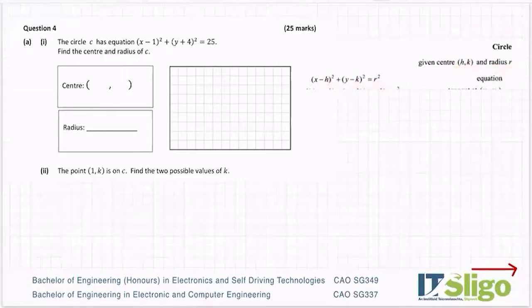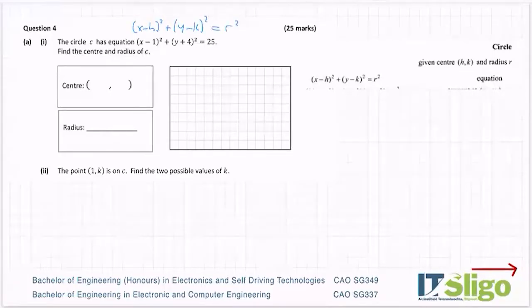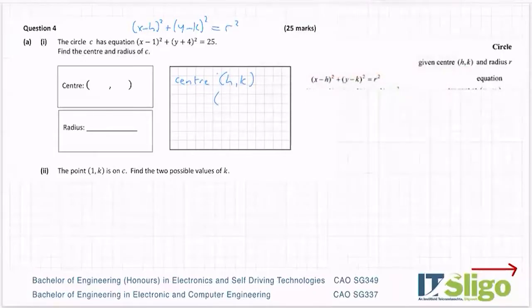To find the center and radius, I write just above it: (x minus h) squared plus (y minus k) squared is equal to r squared — taken straight from the log tables. Then I match: my center is (h, k). Comparing, I can see the minuses match, so h is 1.